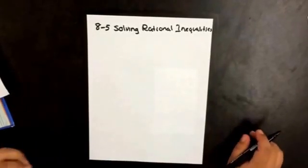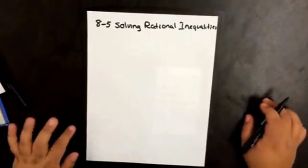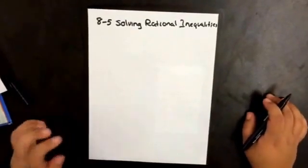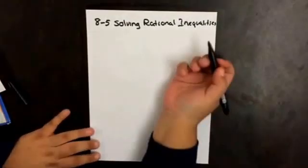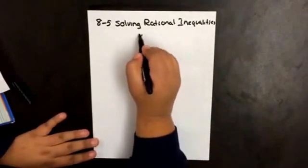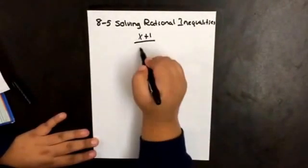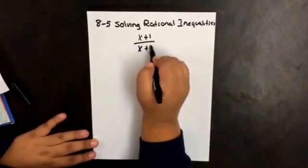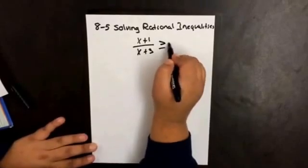8.5: Solving rational inequalities. I'm going to do a couple of examples. So we have x plus 1 over x plus 3 greater than or equal to 2.